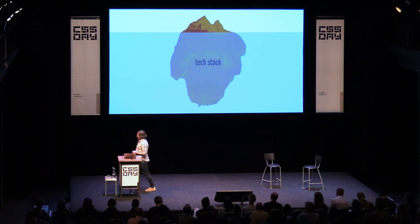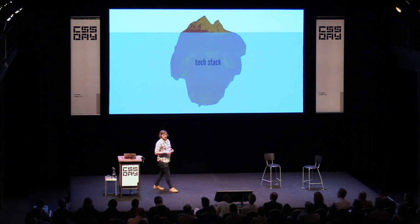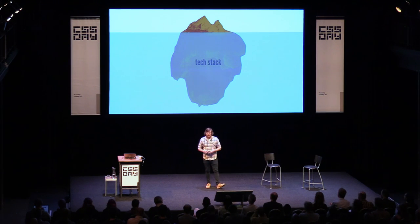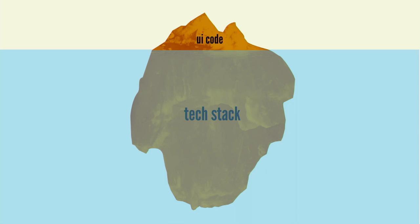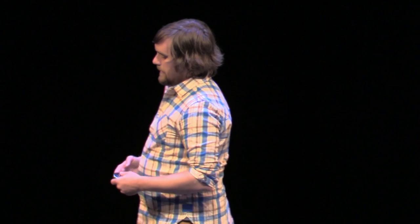So where do we build the design system? If you look at a tech stack, there's a lot of stuff in there — NPM install your application codebase and you basically go walk the dog, take a nap, make dinner, go to bed, wake up the next morning, and things are almost done installing. The problem is, do we really need this giant iceberg of technical dependencies just to make a button blue? Probably not. So it's really important to recognize that the UI code is really just a sliver of all of this. We can create an environment that allows us to optimize and focus on that UI code. I call this a front-end workshop environment.